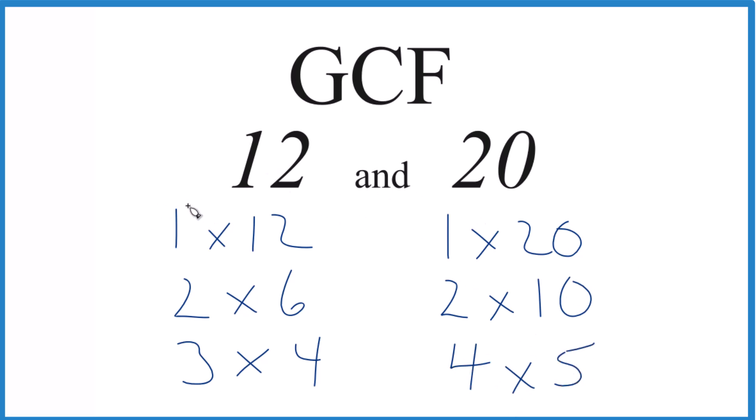So the common factors, we have 1 here and here. It's a common factor. 2, that's another common factor. And then 4 right here.